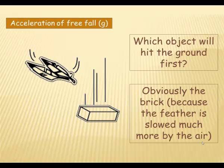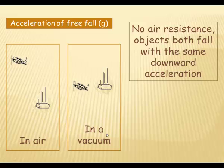Now, key word there is air. What happens if we remove the air? Let's have a look. Here we've got two situations: feathers, brick in air; feathers, brick in a vacuum. Now, in a vacuum there is no air, therefore there is no air resistance and therefore both objects will fall with the same downward acceleration. So both of these will fall at the same speed and reach the ground at the same time.